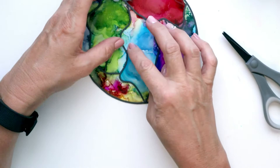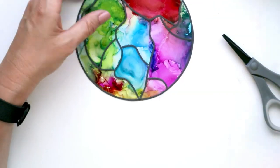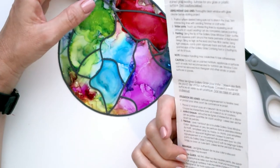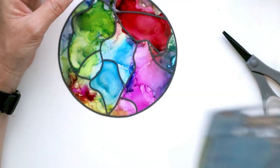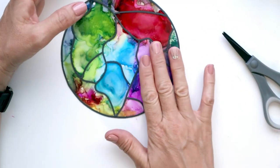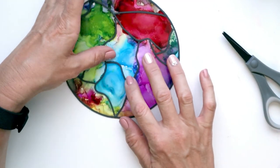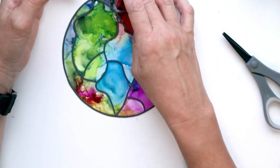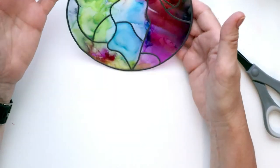And you could use a marker to do this, but what's nice with these lead effect lines is that it also has a little bit of depth, a little bit of height to them. So it does actually look like lead that you've put on here.